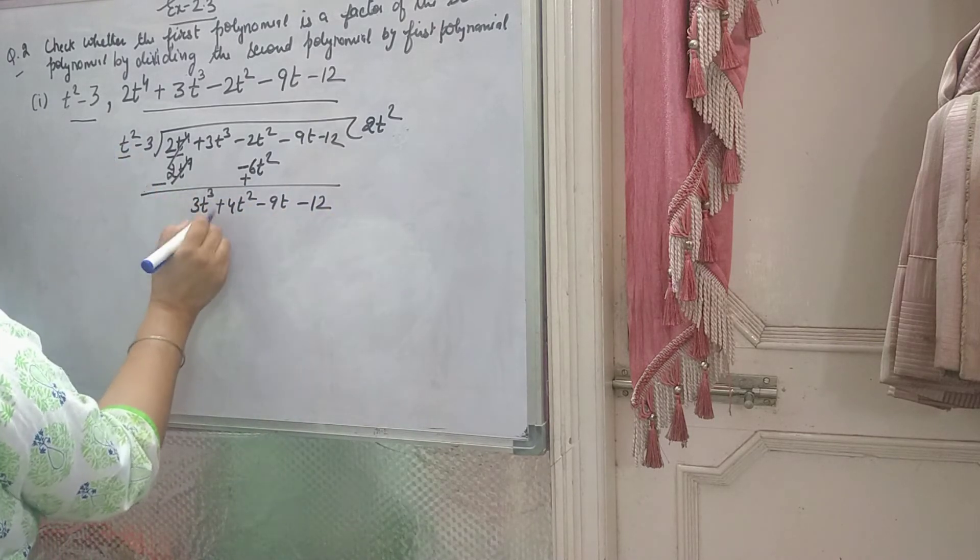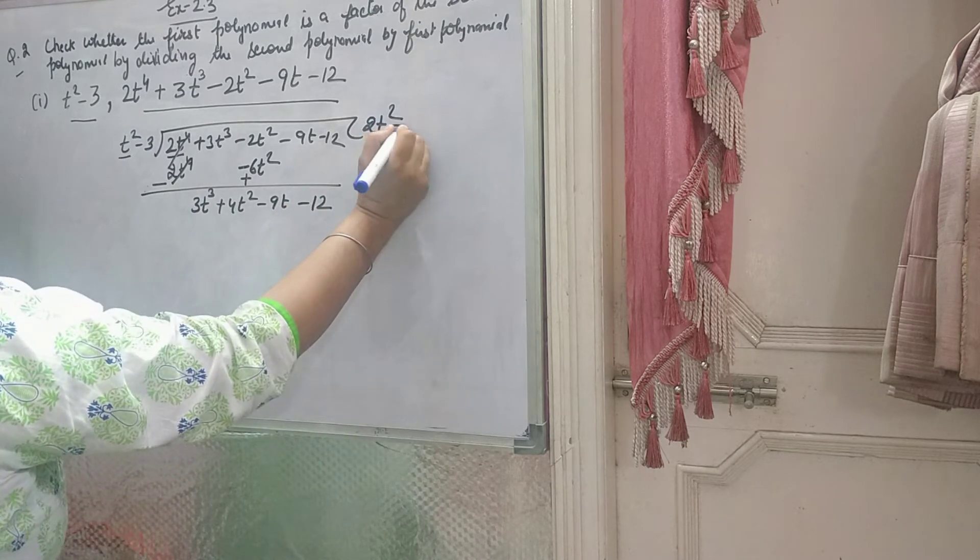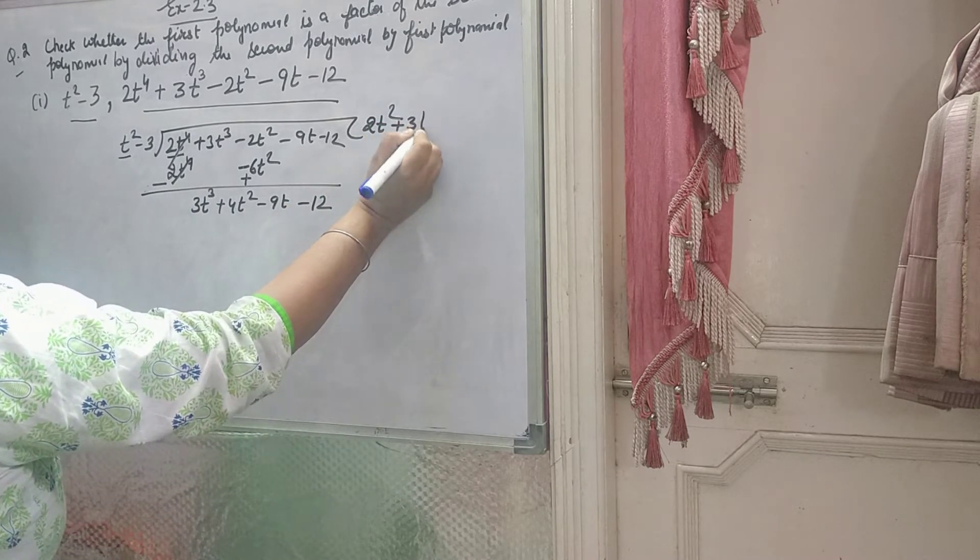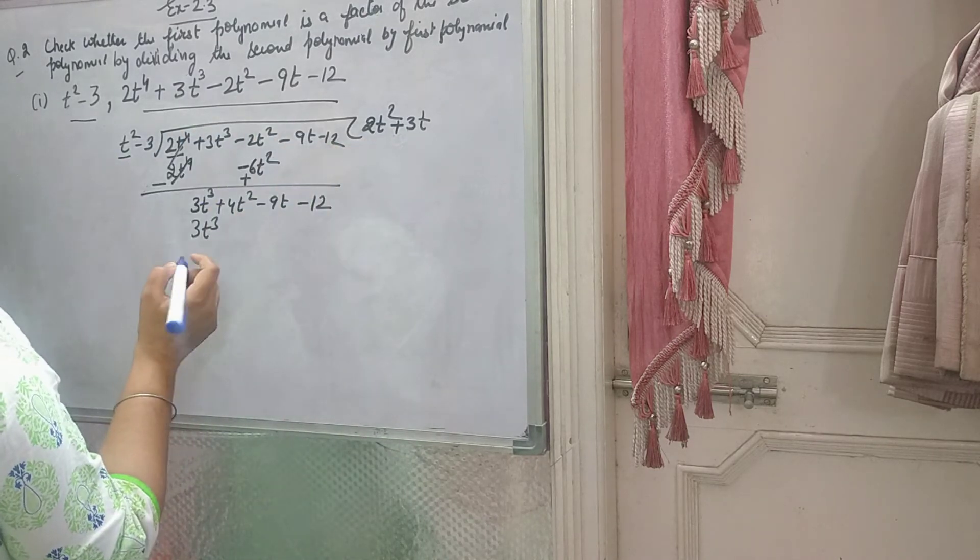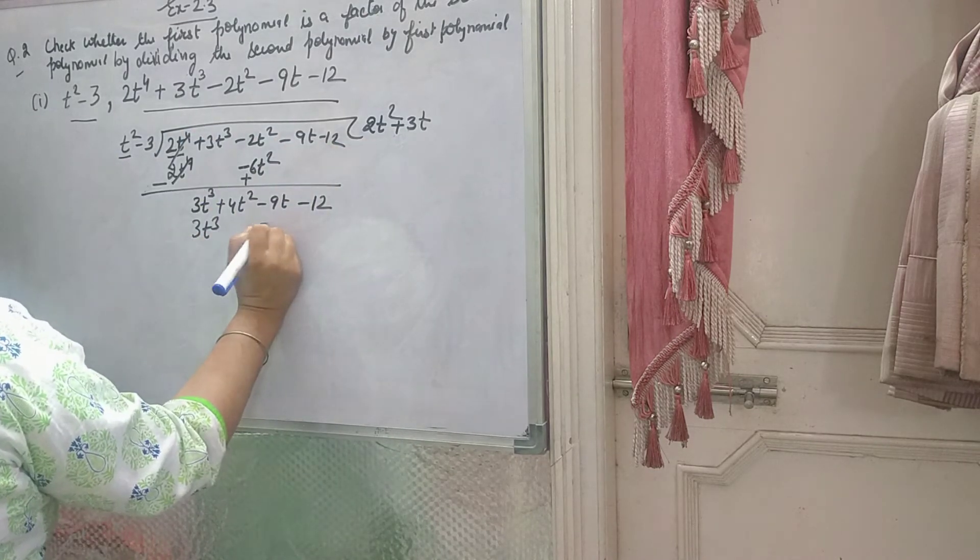Now here you have t², and you need 3t³. So you will multiply by 3t. Now 3t³ came. And minus 3 into plus 3t, you will get minus 9t.